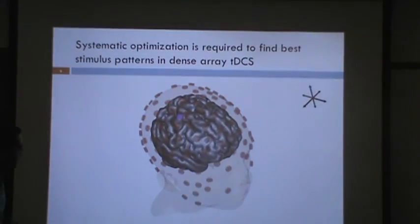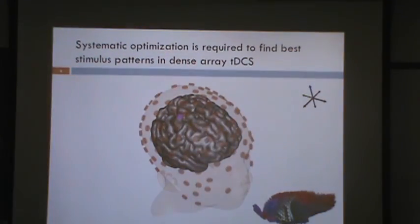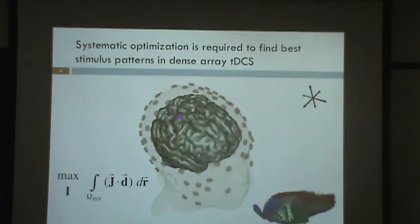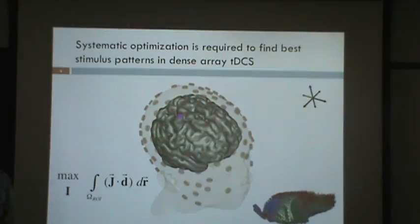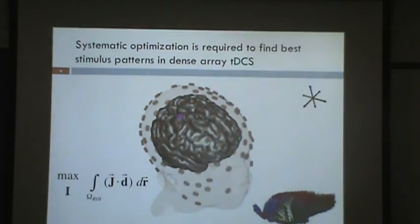Using our head model, the first thing we do is define where we want the current to go — the region of interest. We would like to modulate this region, which we think is related to the brain condition we are studying. We also want the current to go in one particular direction, because reversing the current direction in the brain region may actually produce reverse effects — polarity matters a lot. So we defined our objective function as: maximize the directional current in the target brain structure.